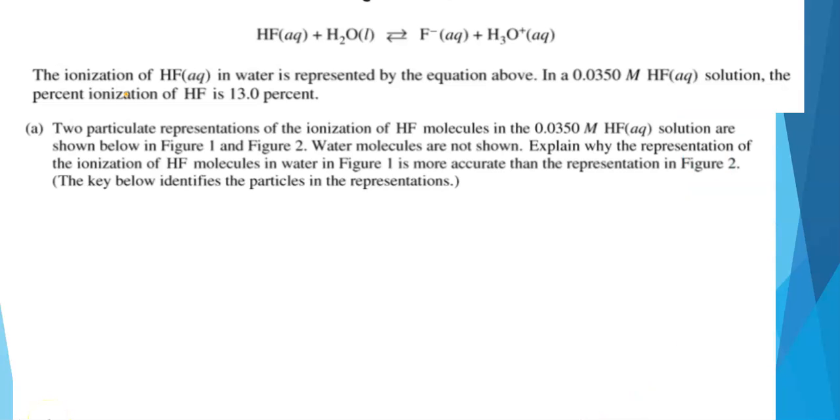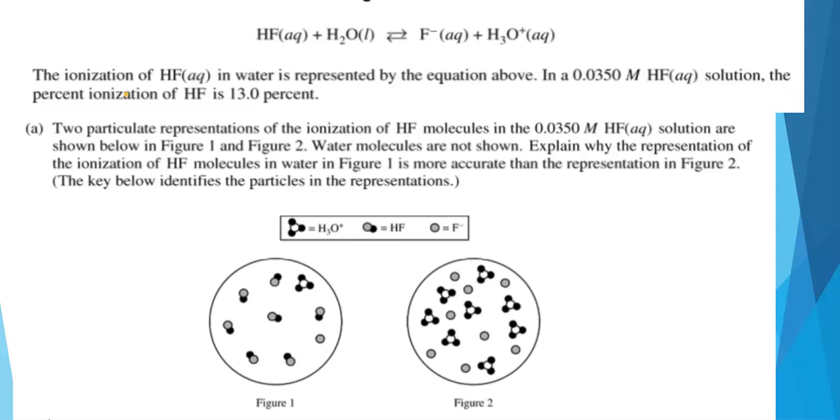Here's the actual first question. Two particulate representations of the ionization of HF molecules in this 0.0350 molar solution are shown below in figures 1 and 2. Let's look at those. Figure 1, figure 2. Why is figure 1 a more accurate representation of what's going on in these solutions compared to figure 2? Well, we're actually given a lot of information here. First, we're told that the percent ionization of HF in these solutions is 13%. If you don't already know this, HF is a weak acid.